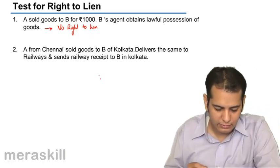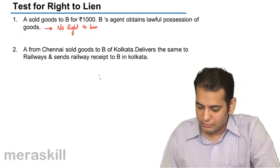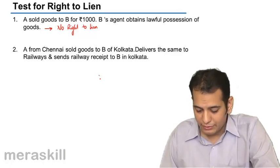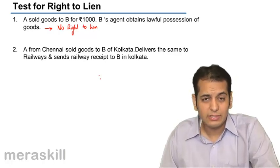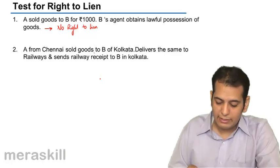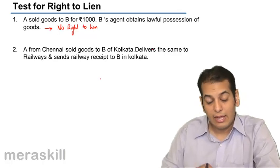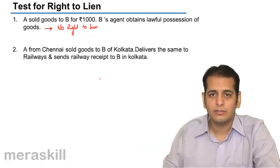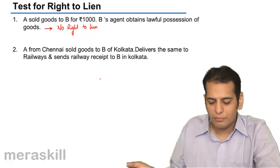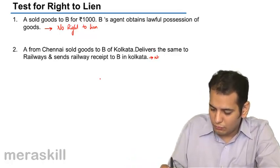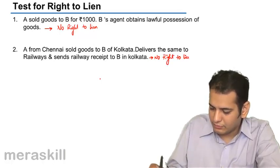Second case: A from Chennai sold goods to B of Kolkata. He delivers the same to the railways and sends the railway receipt to B in Kolkata. Does right to lien exist in this case? No, because A has sold the goods to B, delivered them to the railways, and also sent the railway receipt to B. So B has got the document of title. Therefore, no right to lien exists in this case.